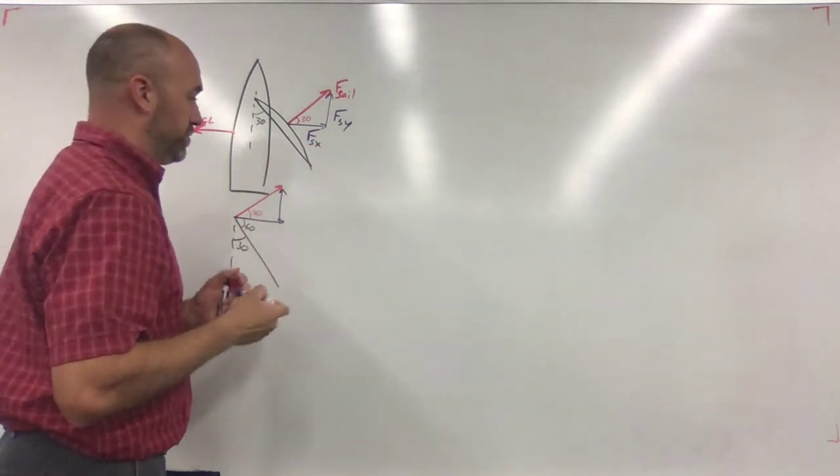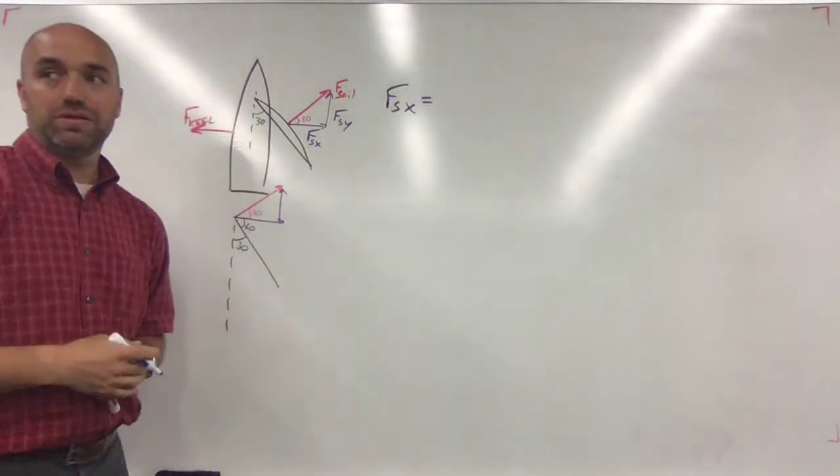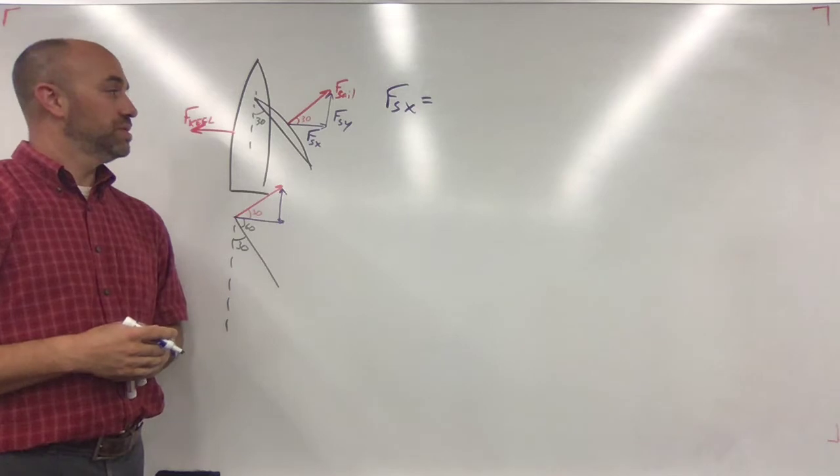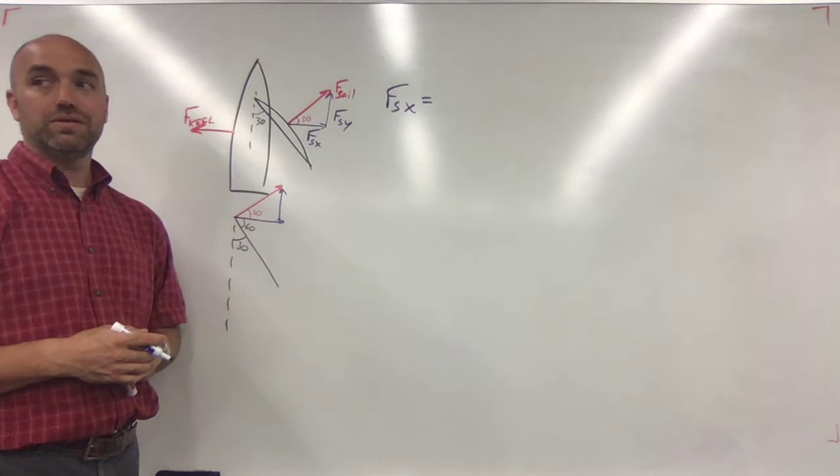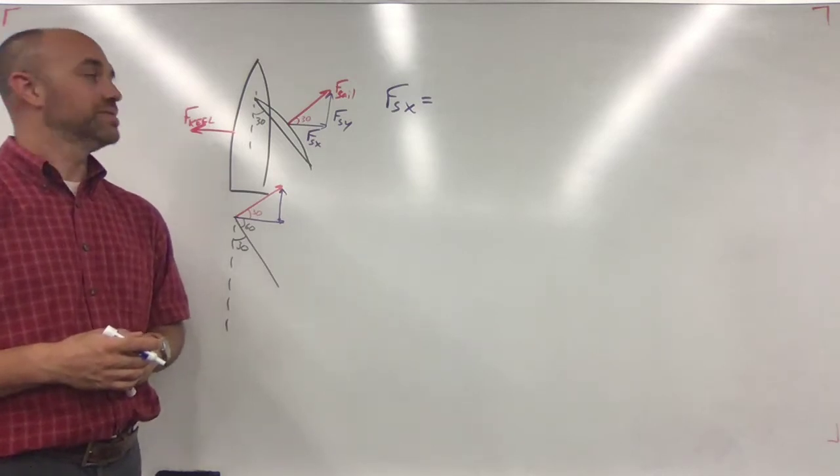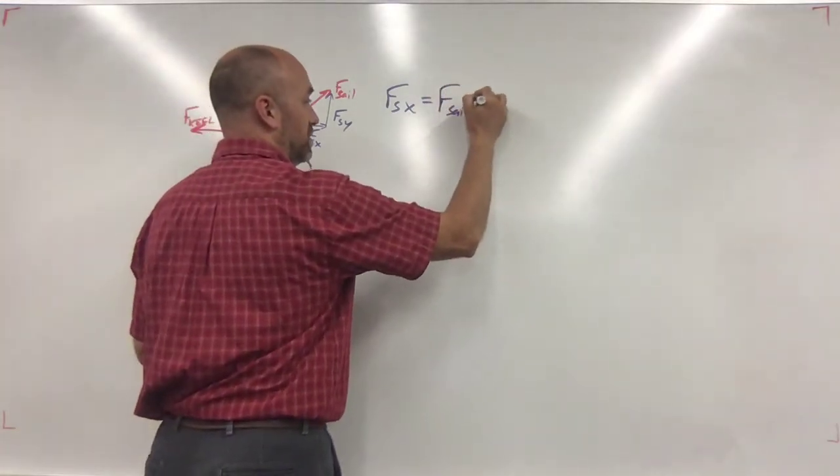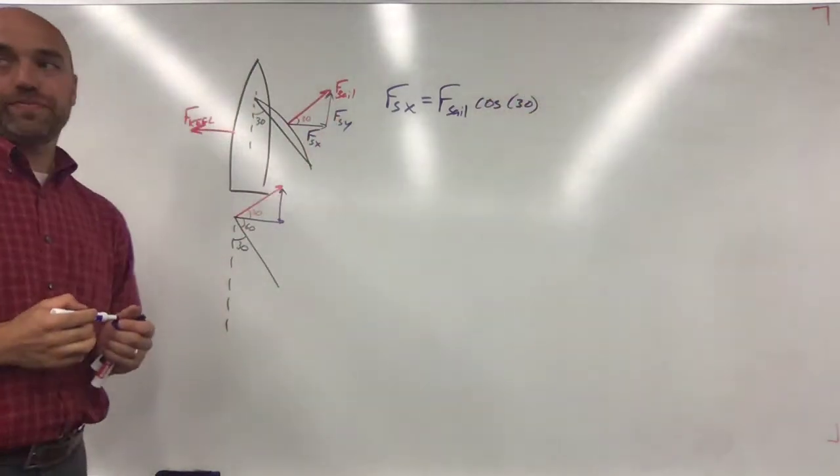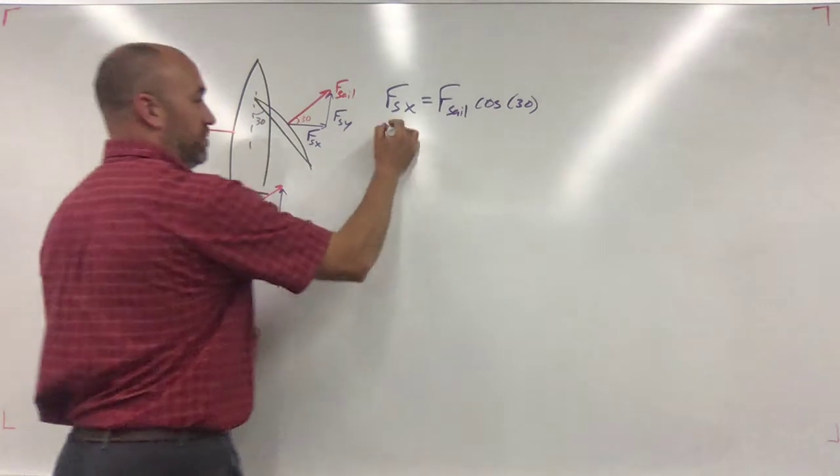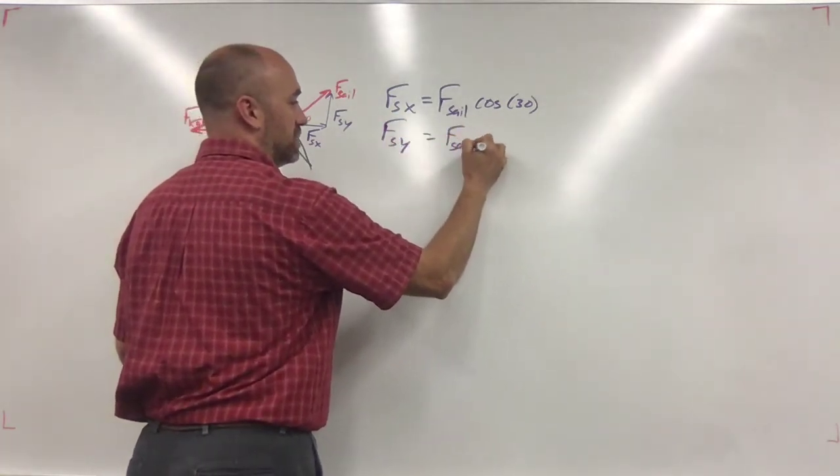So that means this is 30. What's going to be your equation for F of the sail in the X direction? Yes, force of sail times the cosine. And F sail Y? What's that going to be?